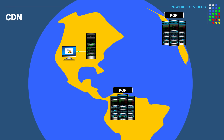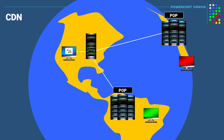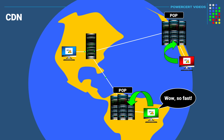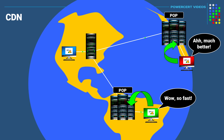So instead of users connecting directly to the origin web server to retrieve the webpage, they will connect to an edge server closest to their location, which eliminates any latency caused by long distances and dramatically speeds up website retrieval. So regardless if users are located near the origin web server or far away in a different country, it wouldn't matter — the website will load quickly for everyone.